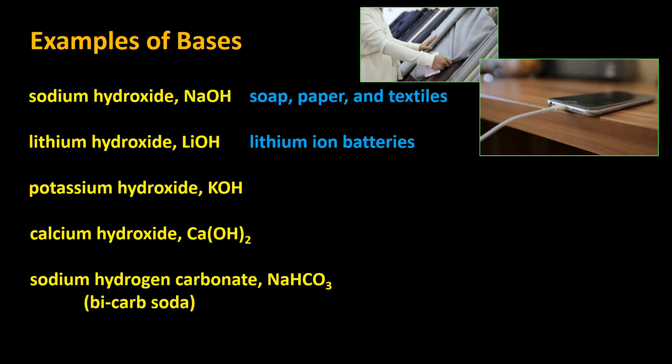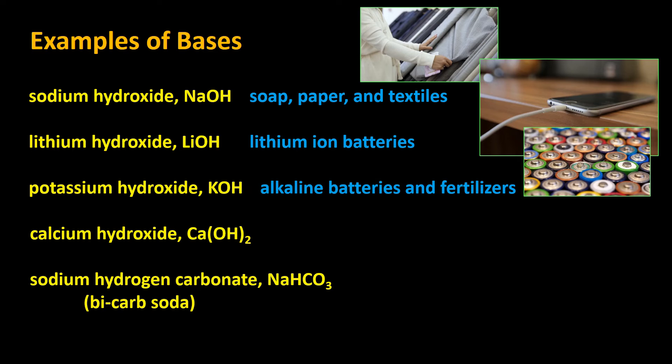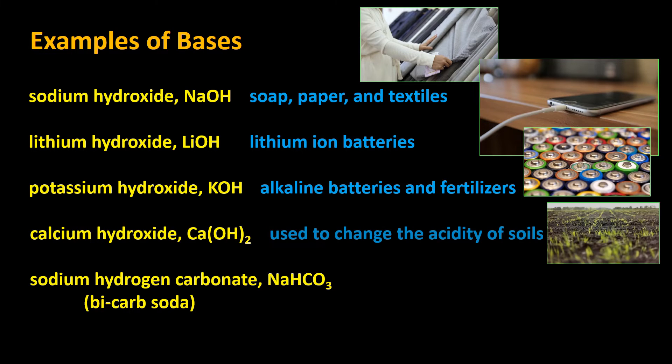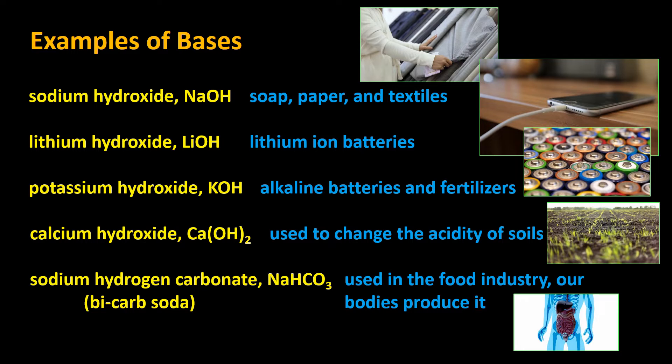Potassium hydroxide is used to produce alkaline batteries and fertilizers. Calcium hydroxide is used to change the acidity of soils on farms. And sodium hydrogen carbonate, bicarb soda, which we looked at extensively in our last episode, is used in the food industry a lot.